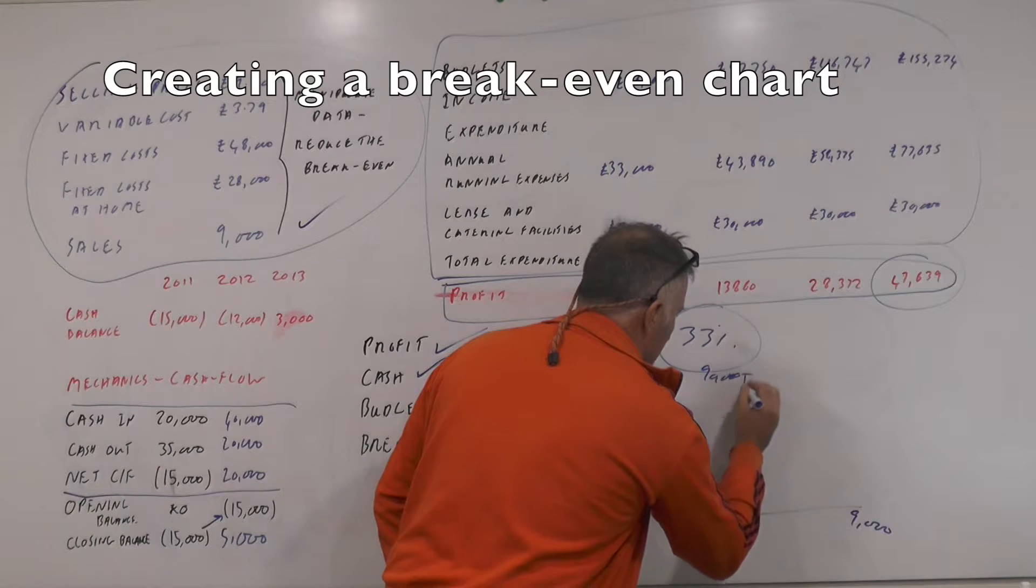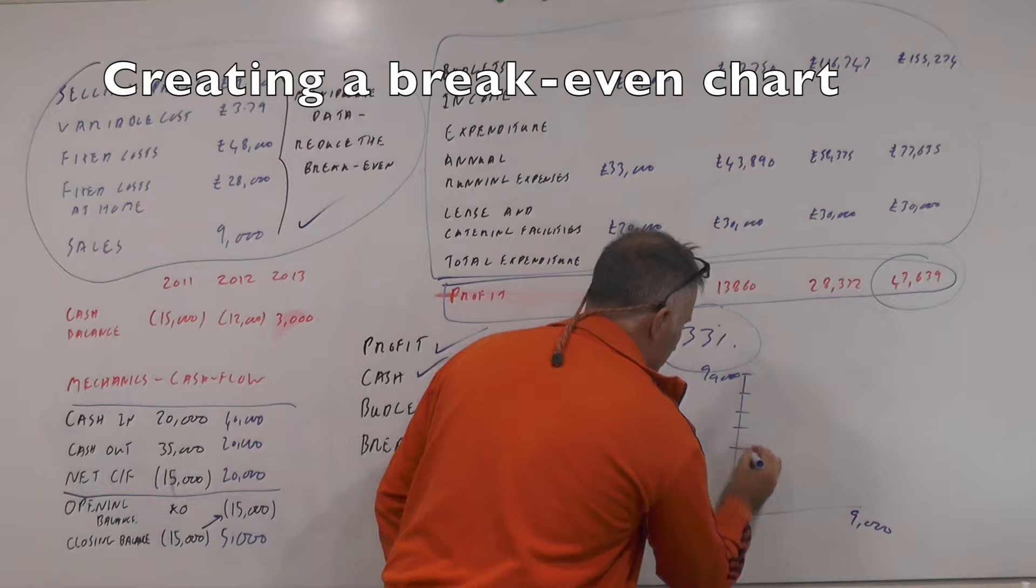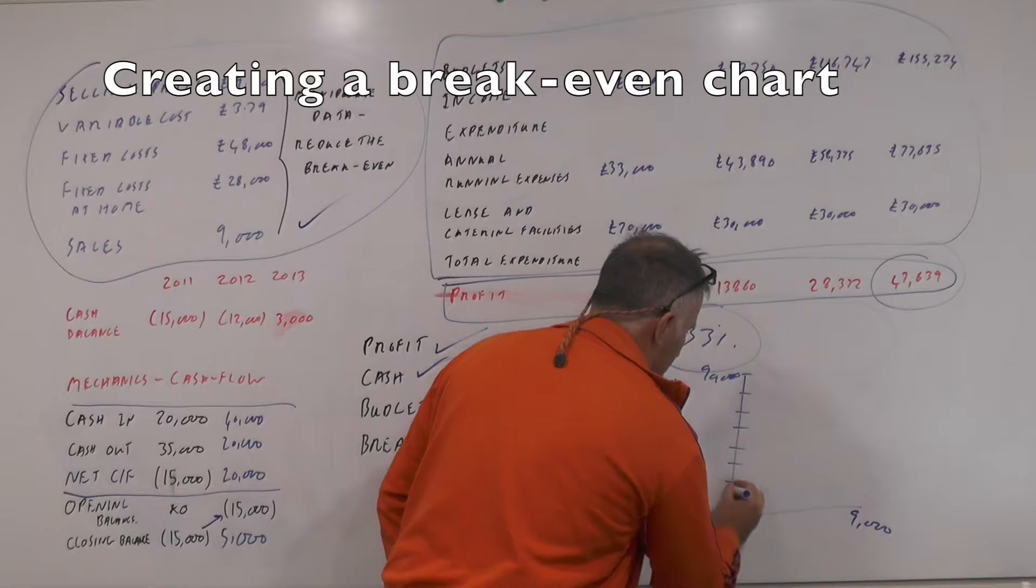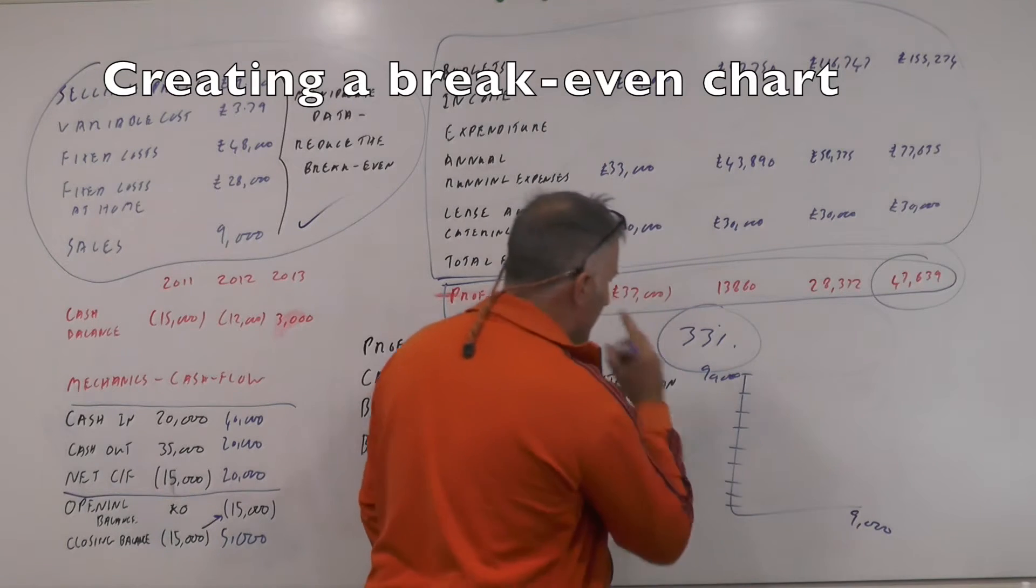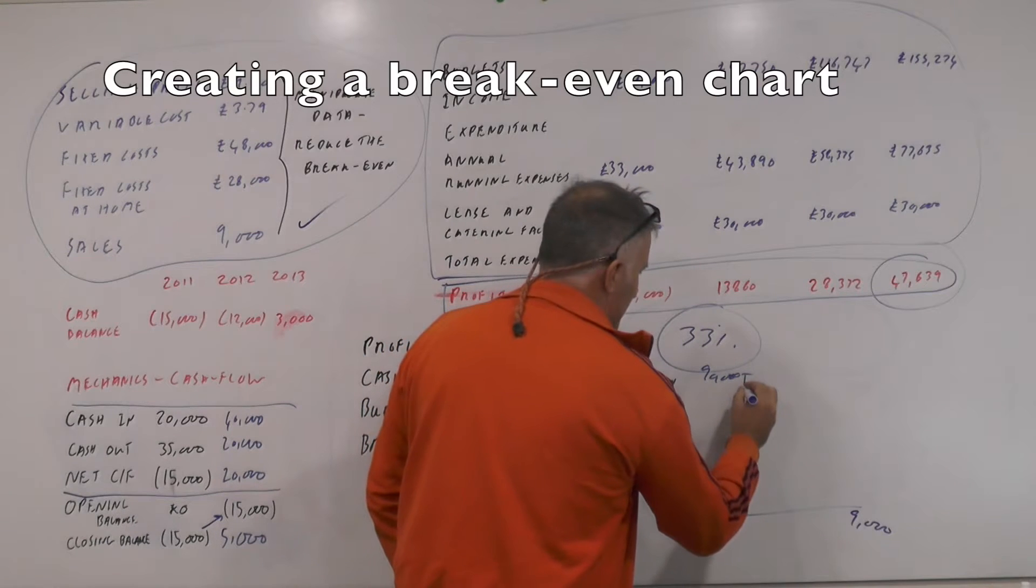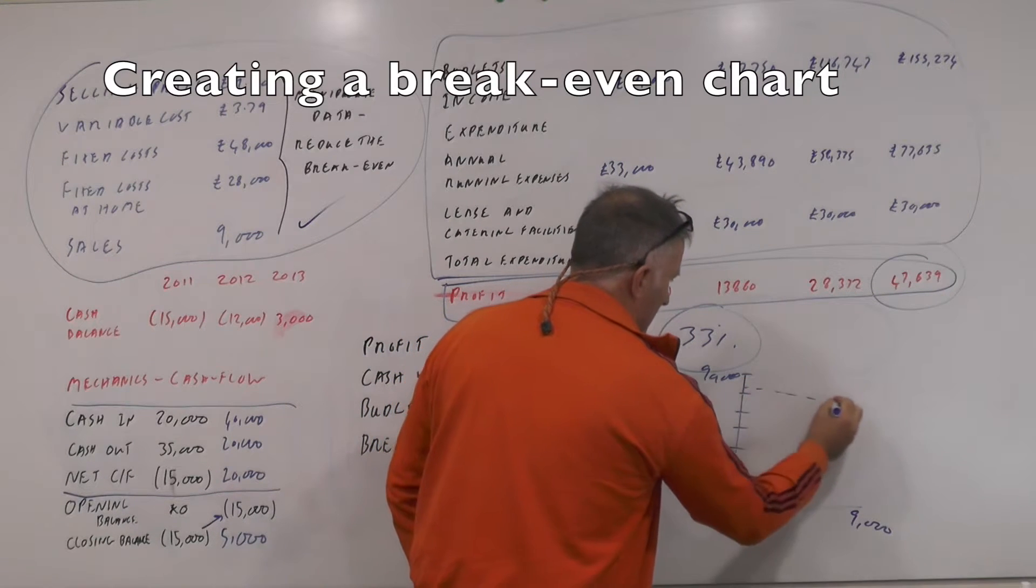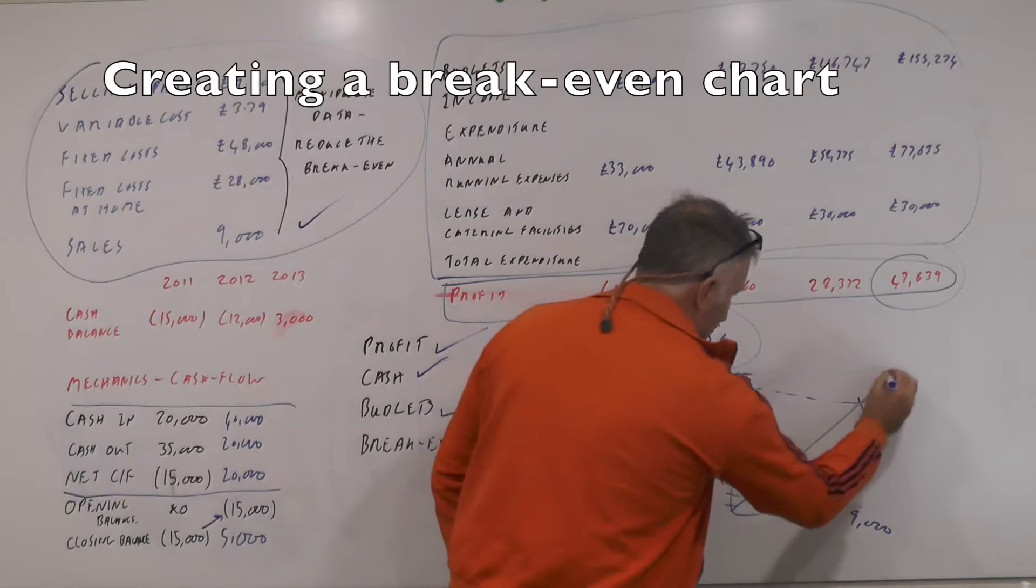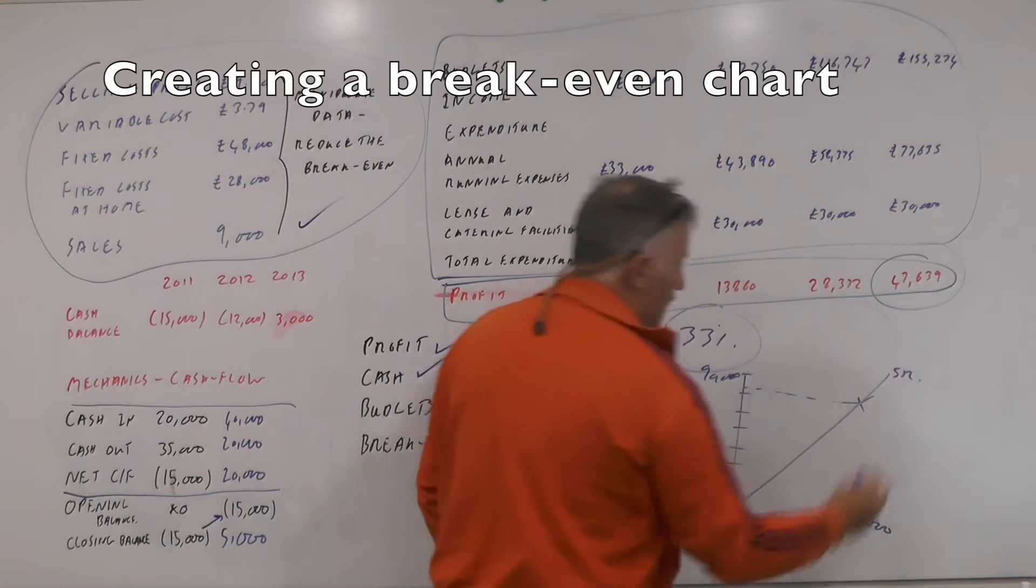So if we went to 9,000 down here and we went to 90,000 here. Okay 90, 80, 70, 60, 50, 40, 30, 20, 10. Okay and 82,800 is about there.